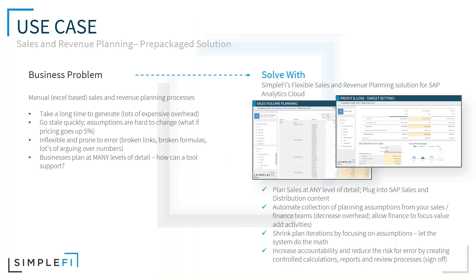From a sales and revenue planning perspective, it's a very fluid planning process with a lot of detail. We're dealing with large dimensionality — product groupings, SKU-level information, customer or customer groupings. We're working with a lot of data, potentially expensive overhead, and this data goes stale quickly. Being able to quickly change assumptions and create new versions or what-if scenarios is important.